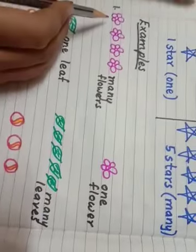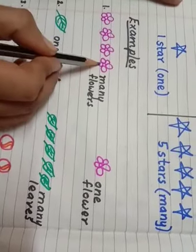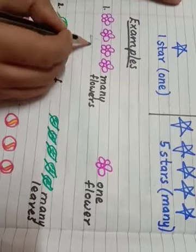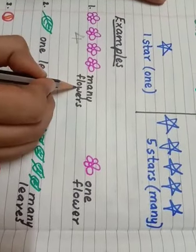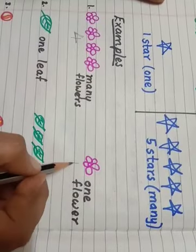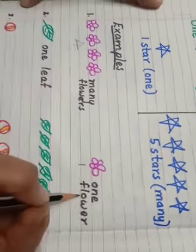Few examples here. One, two, three, four. They are four. So, we will write many flowers. One flower. So, one flower.